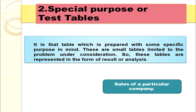General purpose tables are of general use — they are just data banks for the use of researchers in their studies. Special purpose tables, also called text tables, are those prepared for some specific purpose. These are small tables limited to the problem under consideration, and are represented in the form of results or analysis. For example, a table showing the sales of a particular company from January to December is a small, special purpose table.